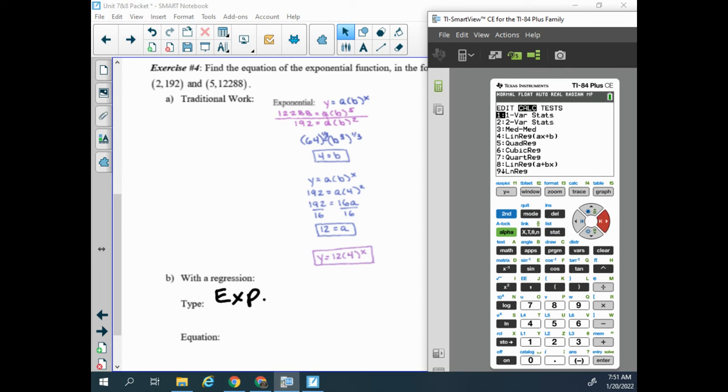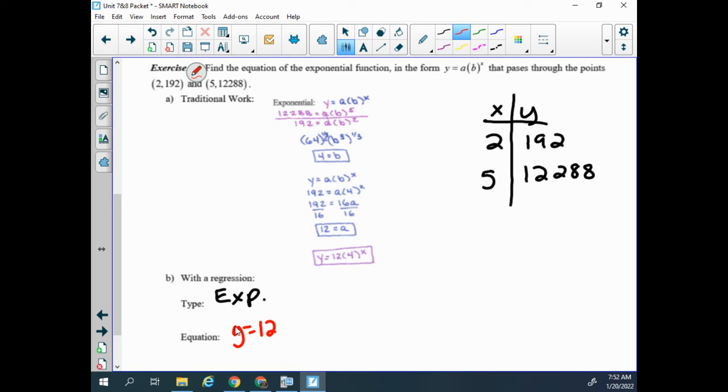Stat, calc, exponential regression is down the menu. If I can remember that it's 0, I can also just press the 0. So we'll go through our menu, and we see on this one, a times b to the x. That's the form we want. And we have the 12 and the 4, just like we see from the traditional work. So this is 12 times 4 to the x.